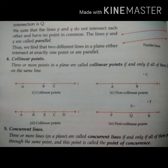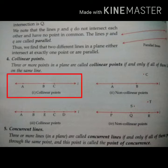Three or more points in a plane are called collinear points if and only if all of them lie on the same line. It means three or more points are mutually collinear if they are on the same line.